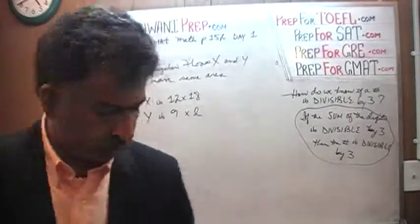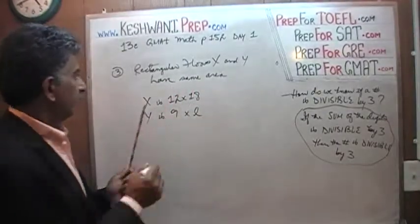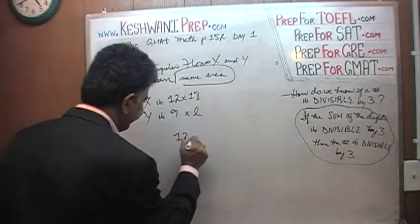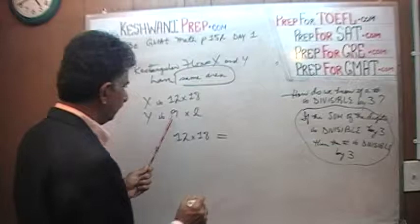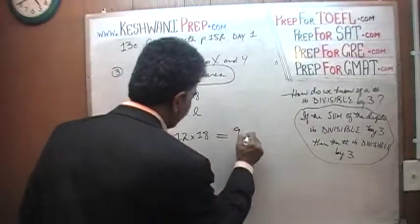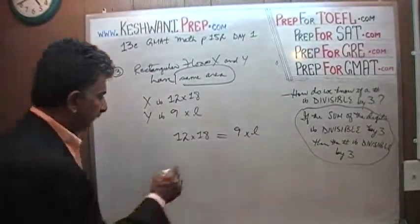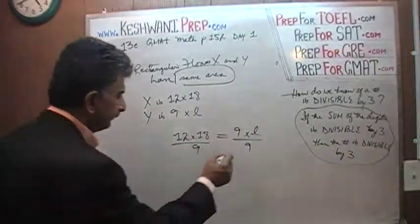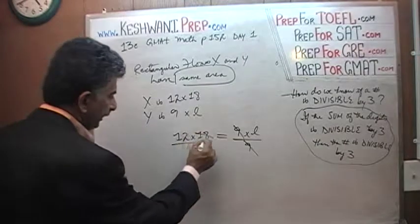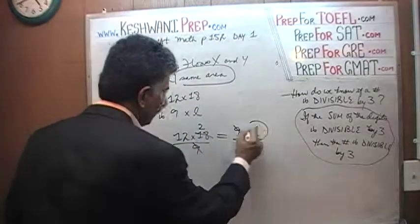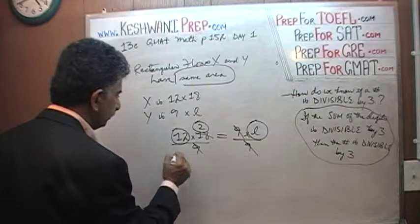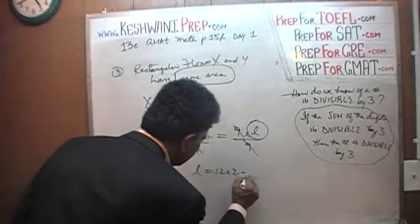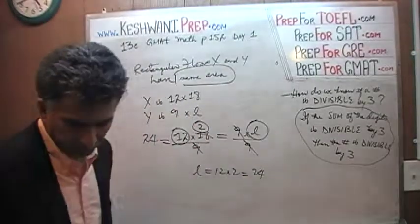Very simple, very straightforward. Because they have the same area, 12 times 18 has to equal 9 times the unknown length. Divide both sides by 9 — 18 divided by 9 gives you 2. So L equals 12 times 2, which is 24. That happens to be answer choice E.